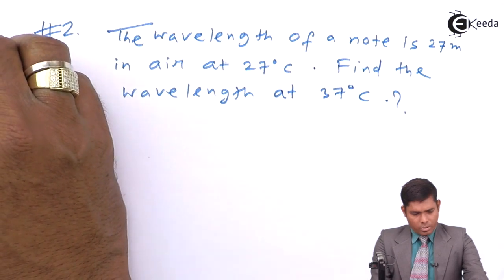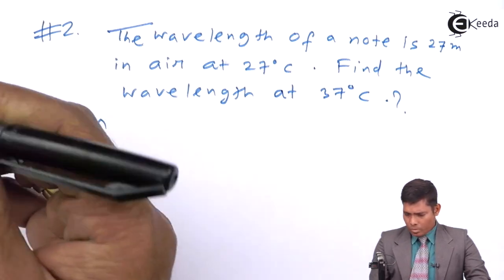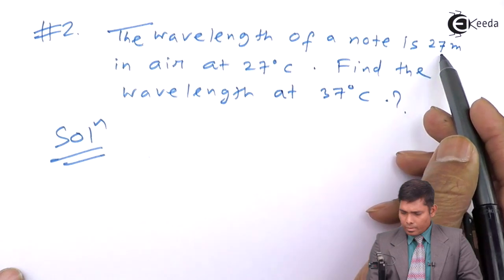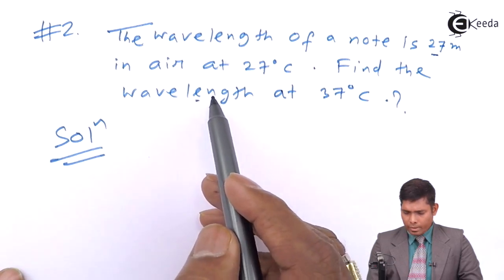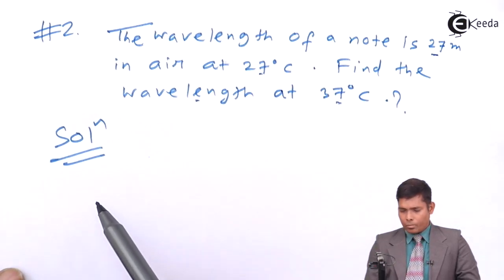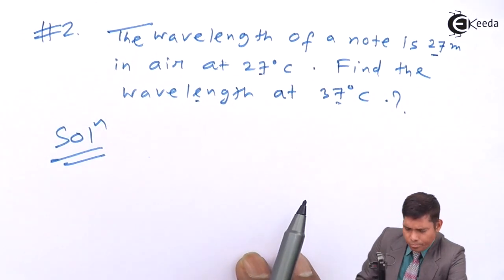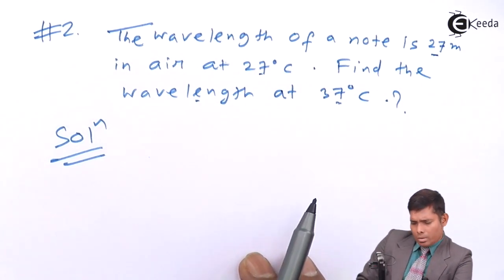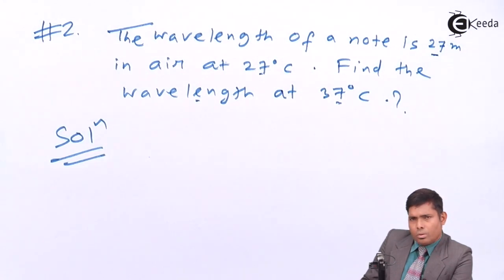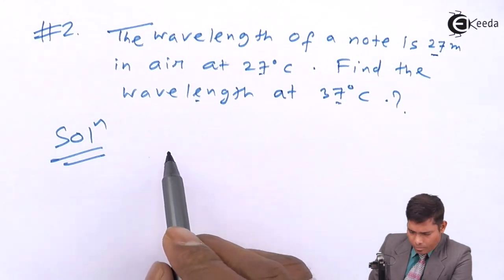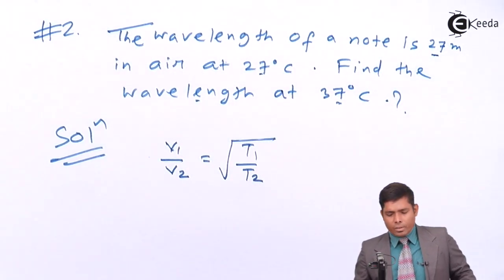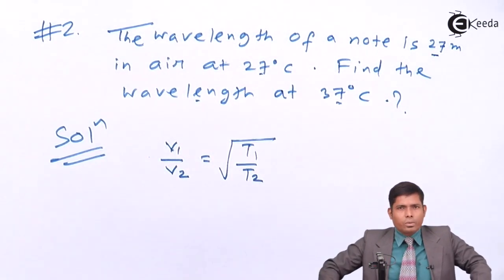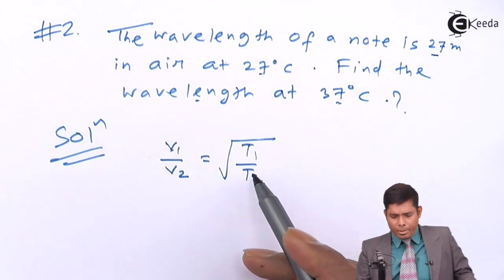This is the first wavelength. This is the second wavelength we have to find. Now, if we have to find the relation between wavelength and temperature, velocity and temperature is related. The velocity ratios are square root of the ratios of the temperatures in absolute scales.